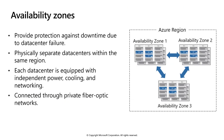Within regions are availability zones. Availability zones are physically separate locations within an Azure region, taking availability to the next level. Availability zones include one or more data centers equipped with independent power, cooling, and networking. It's important to note that availability zones act as an isolation boundary — if one data center in an availability zone is taken offline, the other availability zones continue to function.